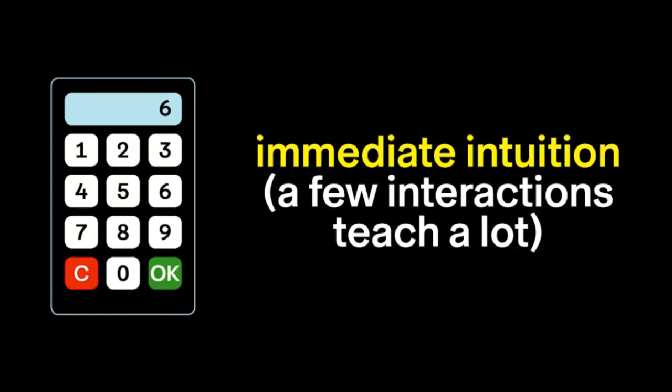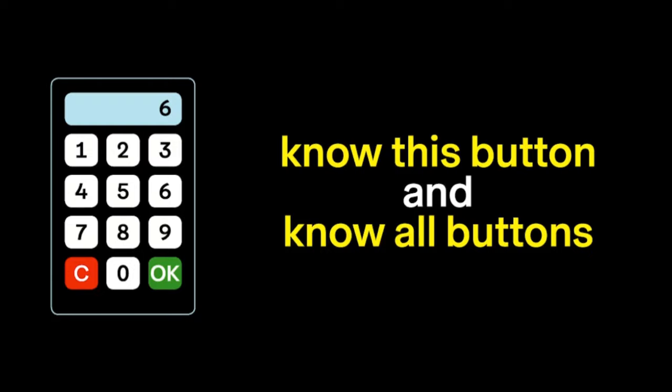Immediate intuition: a few interactions can teach a lot. Once a user has learned how a button works, they can intuitively know how a whole set of buttons work. By extension, they might also know how similar digital buttons work even if they're going to look and function in a different way. If you know how this button works, then you know how all buttons work. These kinds of things build into interface conventions that are consistent across a lot of platforms — so if we know how to swipe in one app, we know how to swipe in all apps, no matter what kind of thing we're doing with the swiping, whether we're shopping, going on a date, or ordering food. We only need to learn how to do that once, regardless of content or context.